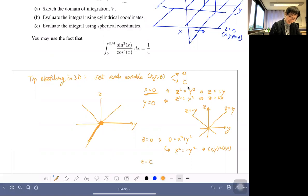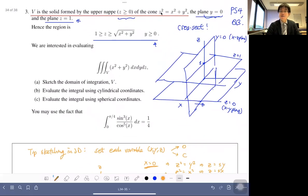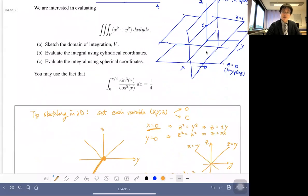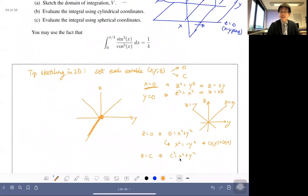So if I set z equals to some constant, right? I get the equation to look like this now, if that's a constant, right? So x squared plus y squared equals some constant. Now that's a circle with radius c, okay?